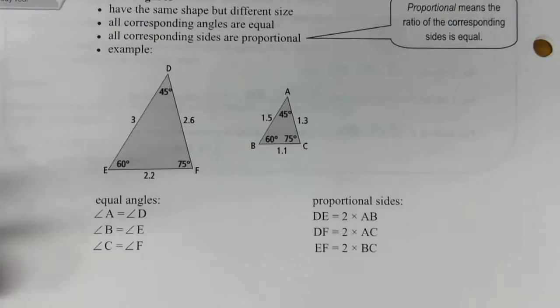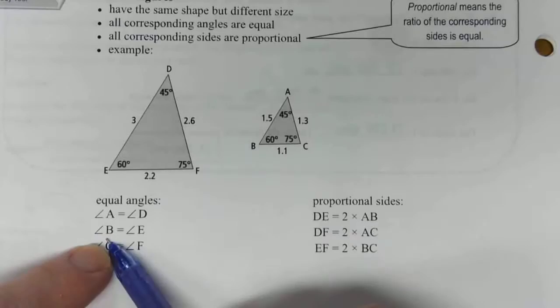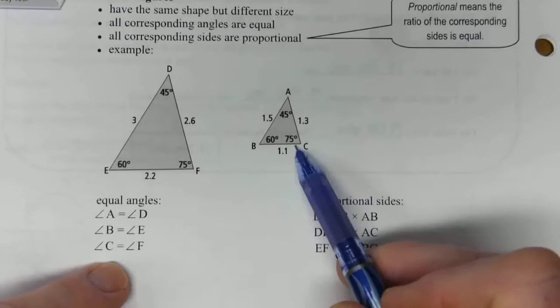So again, just a quick summary. Angle A and angle D match. Angle B and E match at 60 degrees. And then C and F are both 75 degrees.